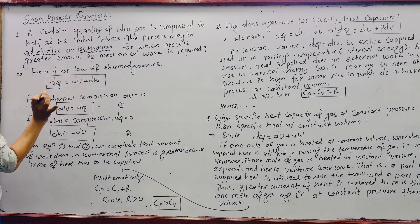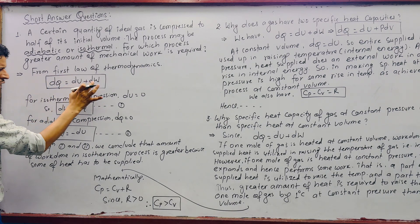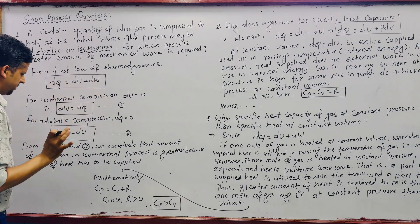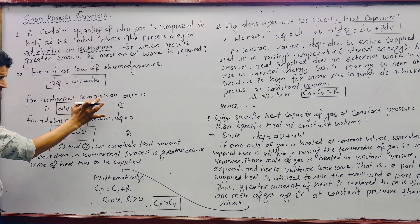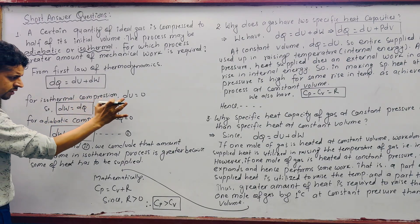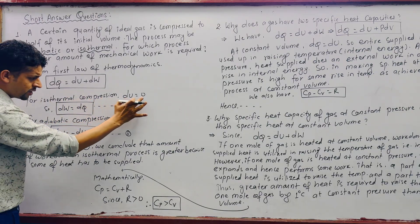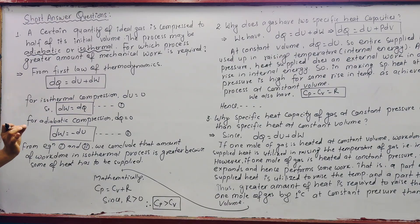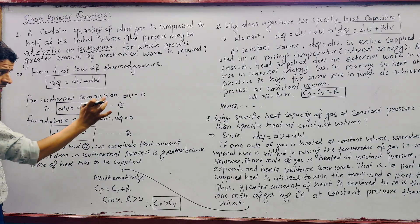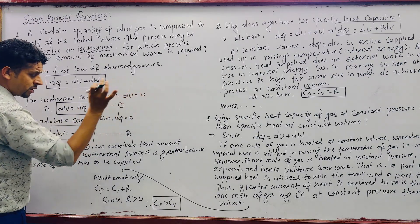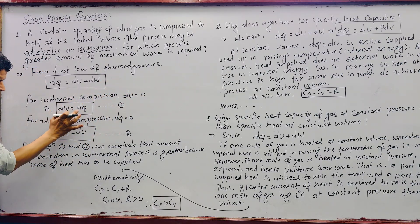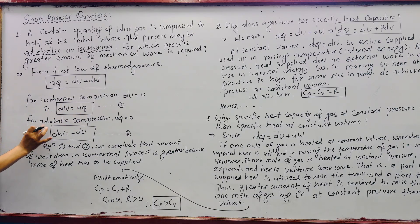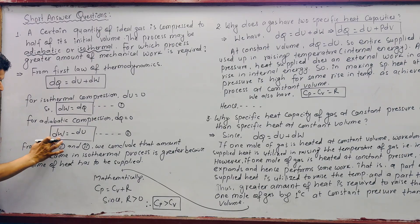From the first law of thermodynamics, dQ = dU + dW. For isothermal compression, dU = 0 since temperature remains constant, so dW = dQ. For adiabatic compression, dQ = 0, therefore dW = -dU.